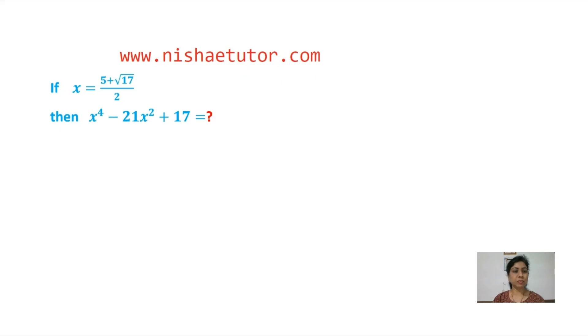Namaste, in this video we are going to simplify this Olympiad problem. If given x equals 5 plus square root 17 divided by 2, then find the value of x to the power 4 minus 21x square plus 17.